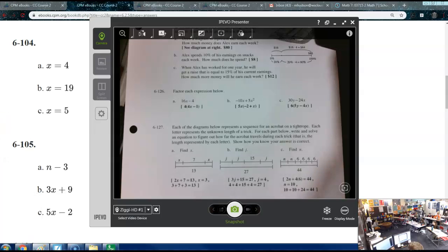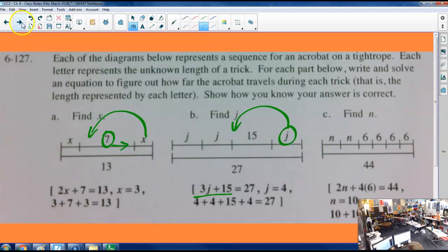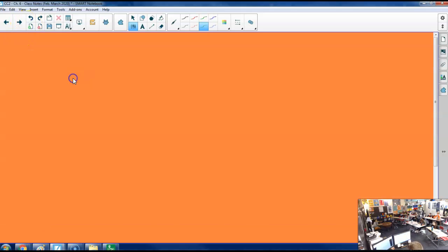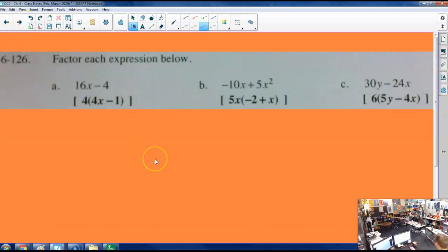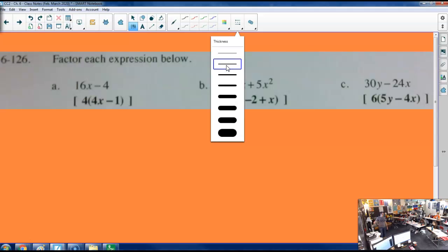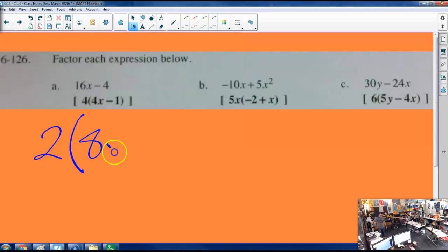So in A, you could have also divided 16 and 4 both by 2. And if you did 2, this would become 2 times 8x minus 2. Factoring is the reverse of distribution. You are literally pulling a number out of both of these through division. So if I divided by 2, the numbers left over are 8x and negative 2. But if we divided by 4 instead, 16x divided by 4 leaves us with 4x. Negative 4 divided by 4 leaves us with negative 1. Both of those are correct.